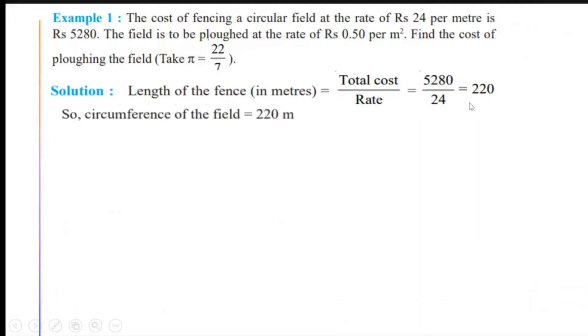That means if I take the radius of the field in meters to be R, then 2πR will be equal to 220. Putting π equal to 22 upon 7, I get 2 into 22 upon 7 into R equals 220. That gives me R equals 220 into 7 divided by 2 into 22.